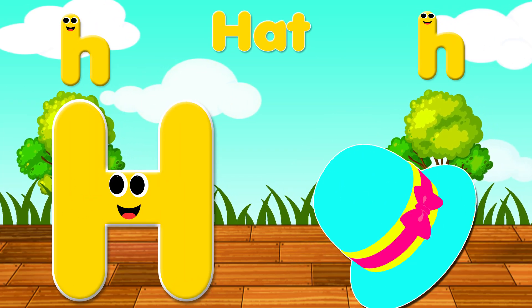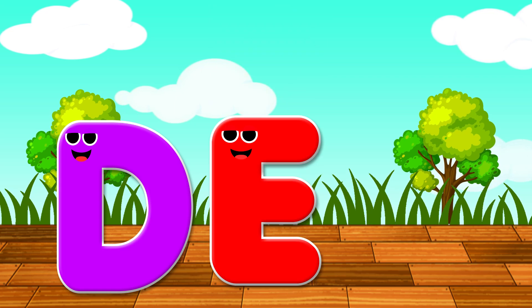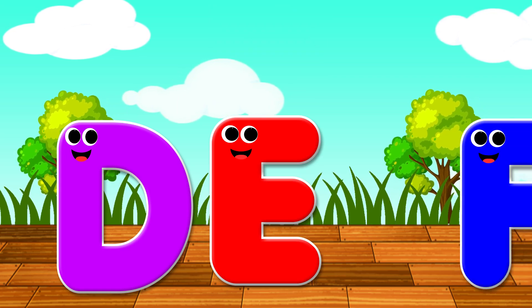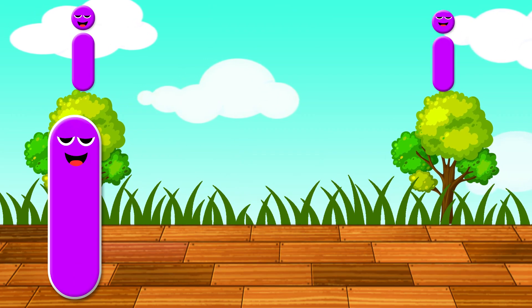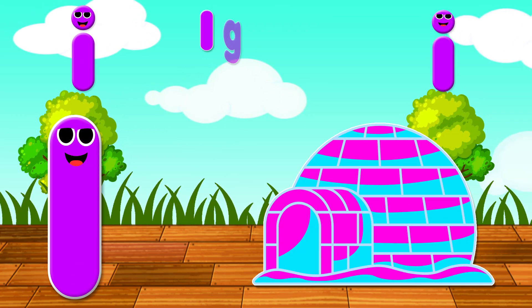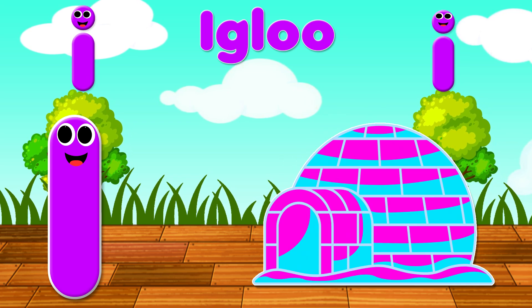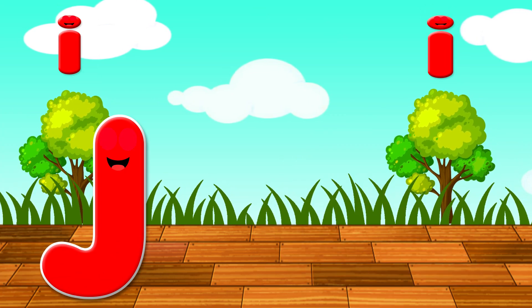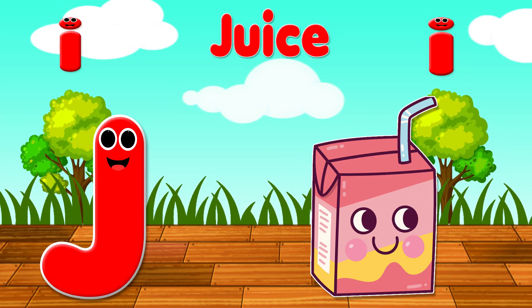H is for hat, h-h-hat. I is for igloo, i-i-igloo. J is for juice, j-j-juice.